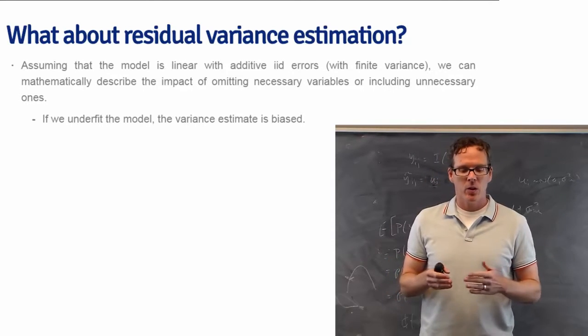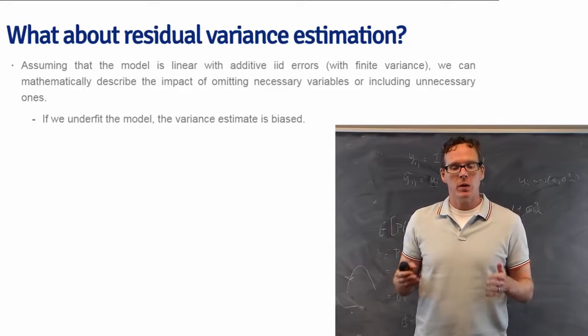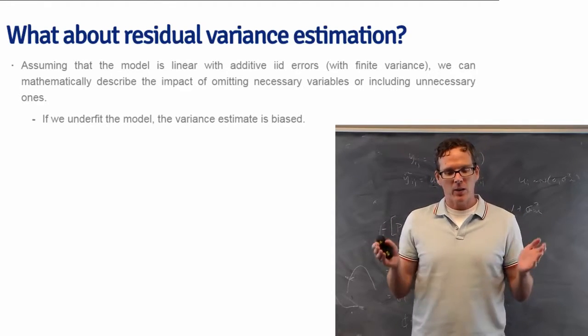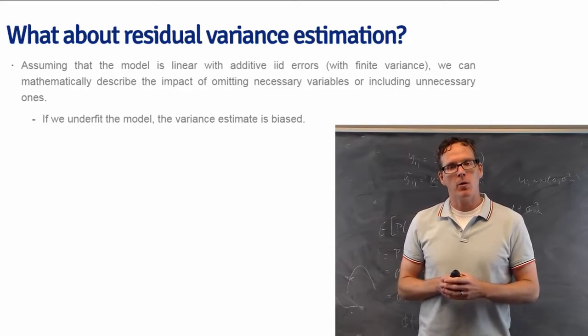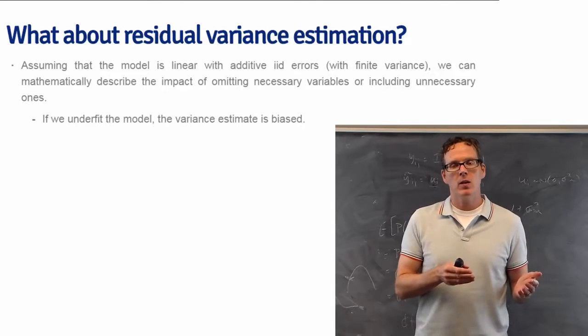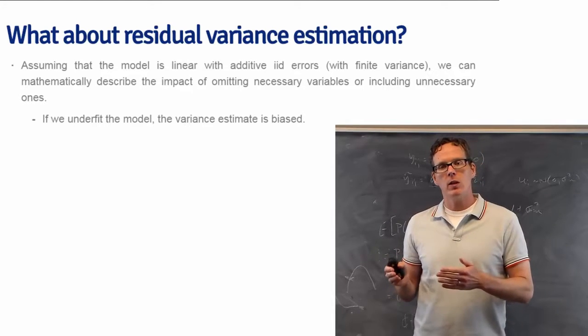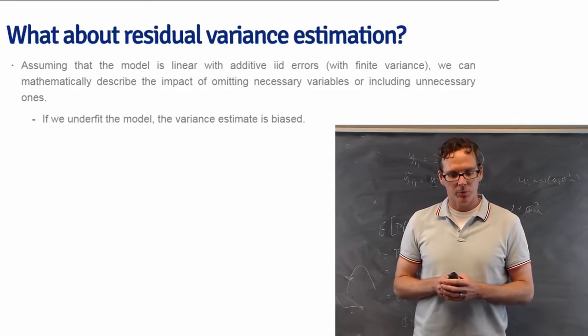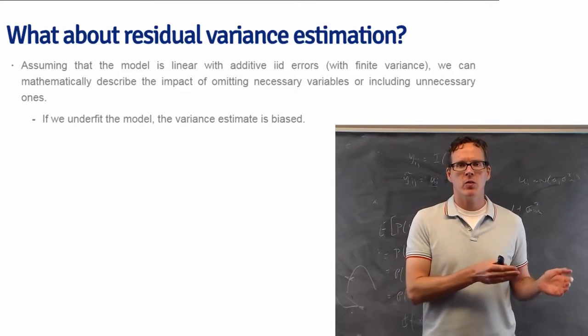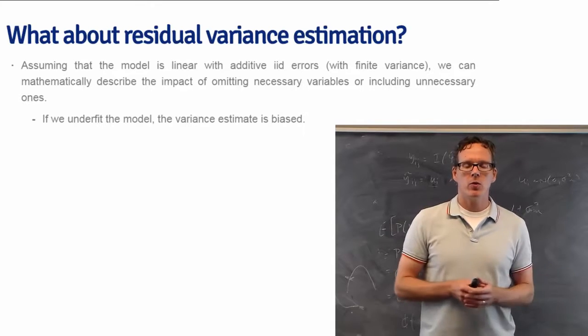So what happens if we have, assuming IID errors and that our linear model is additive and that part of the model is correct, then we can mathematically describe the impact of omitting unnecessary variables or including unnecessary variables. And it follows along the same lines as what we discussed before.